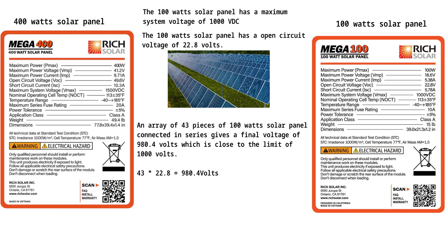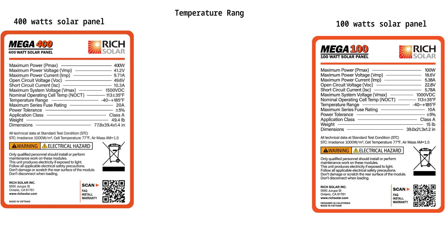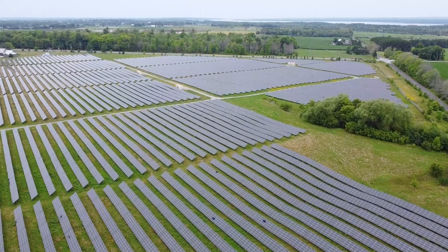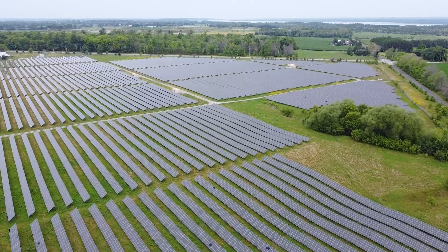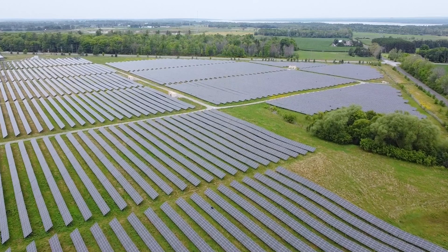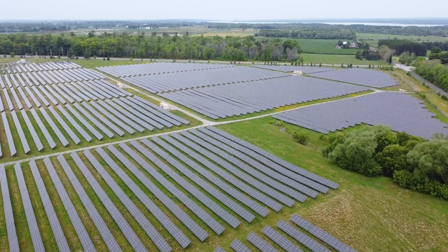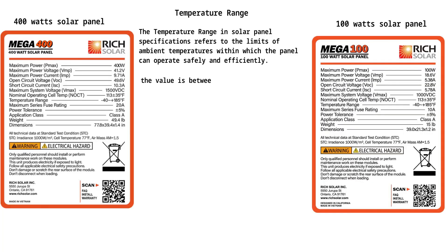7. Temperature range. The temperature range in solar panel specifications refers to the limits of ambient temperatures within which the panel can operate safely and efficiently. It provides important information about the environmental conditions the panel is designed to withstand. For both the 100-watt and 400-watt solar panels, the value is between negative 40°F and 185°F — this is the environmental condition in which the solar panel should be used.